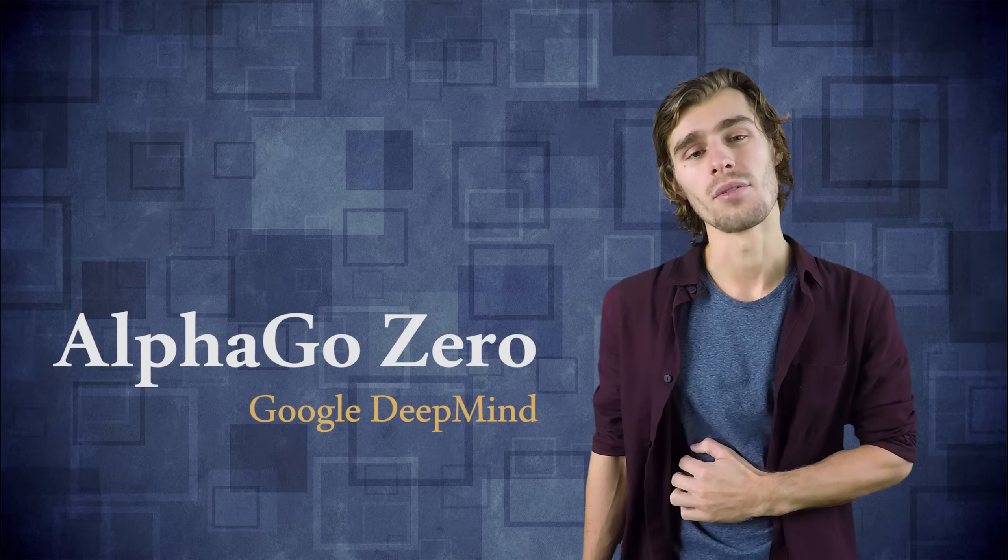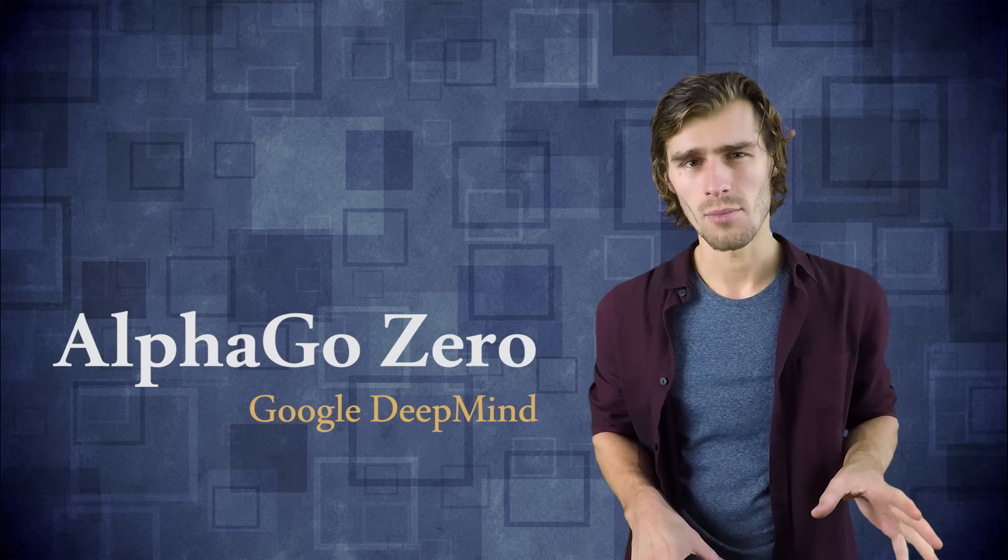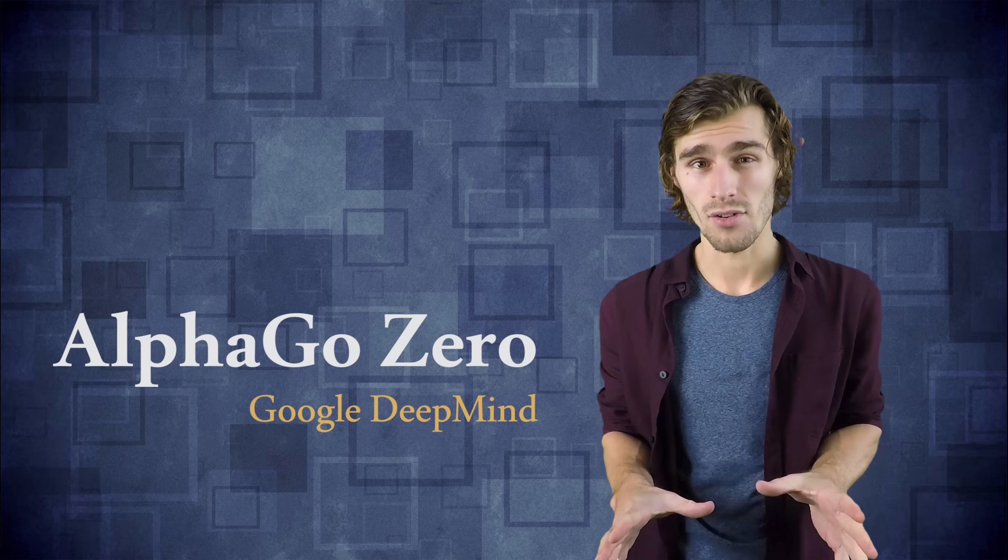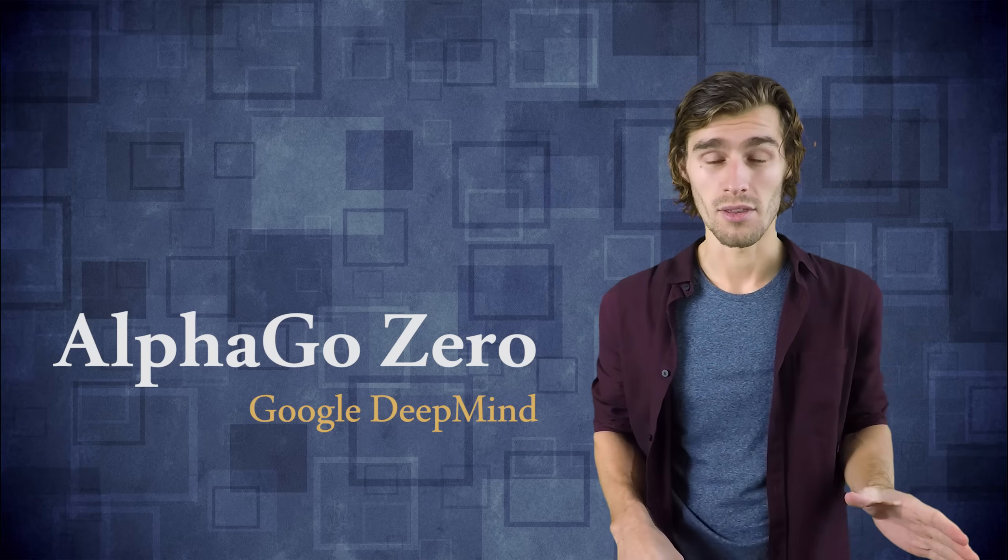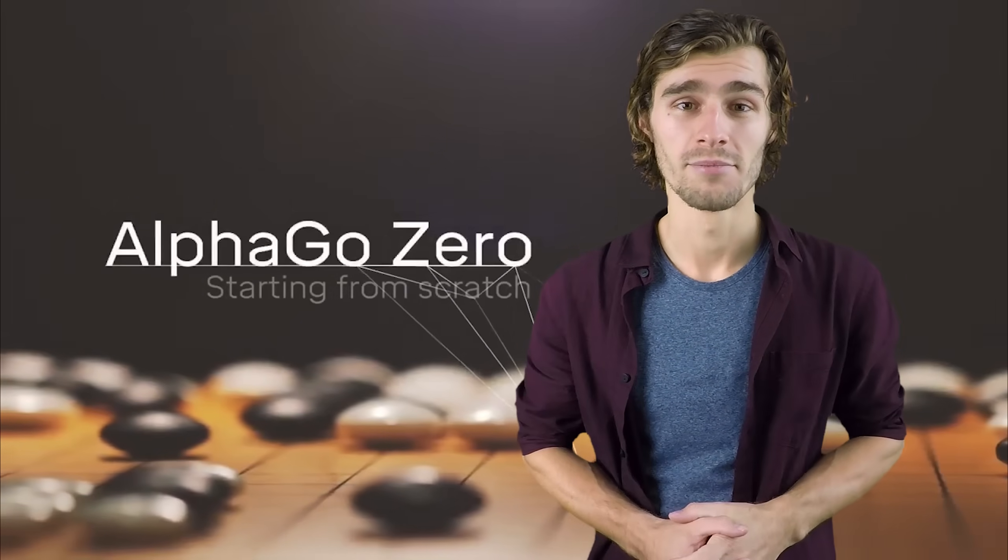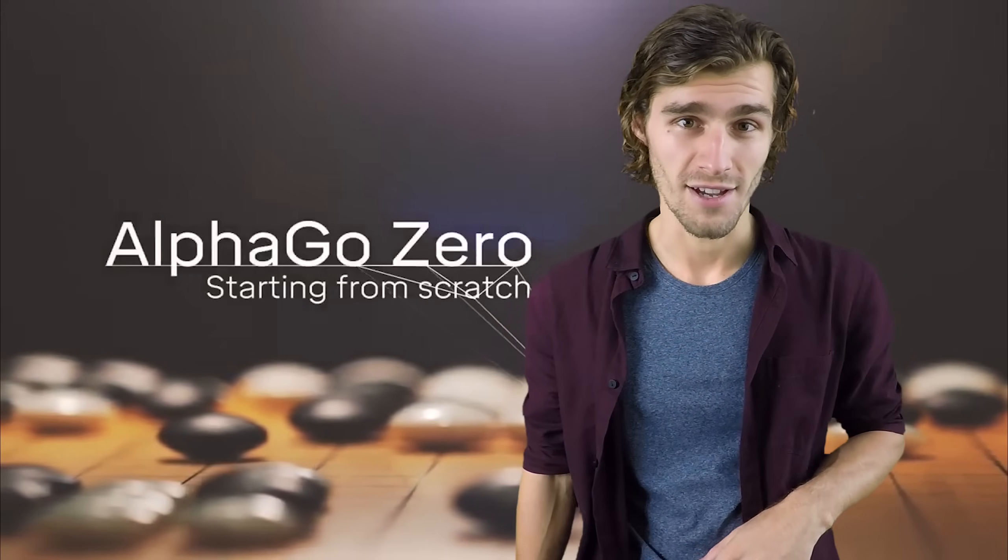So about two weeks ago, the AlphaGo team by Google DeepMind published their latest paper in the AlphaGo series. This time it's called AlphaGo Zero. And I want to dive into some of the technical details that make this version of AlphaGo so much better than the previous version that beat Lee Sedol. Are you ready to dive in deep? My name is Xander, and welcome to Archive Insights.